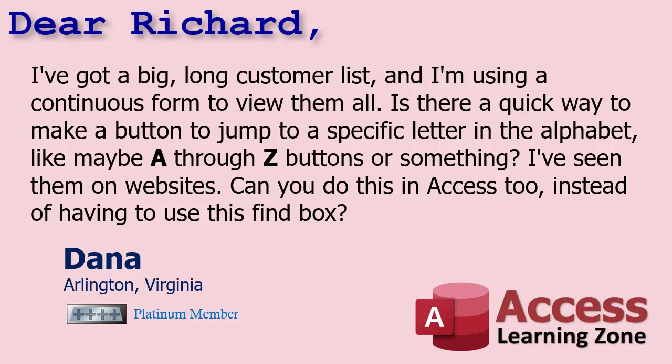Today's question comes from Dana in Arlington, Virginia, one of my platinum members. I get asked this all the time — in fact someone just posted in my forums today about a similar question. Dana says: I've got a big long customer list and I'm using a continuous form to view them all. Is there a quick way to make a button to jump to a specific letter in the alphabet, like A through Z buttons, instead of using the Control+F find box?